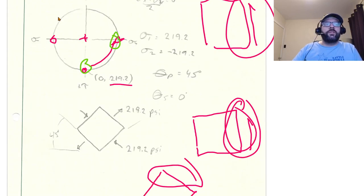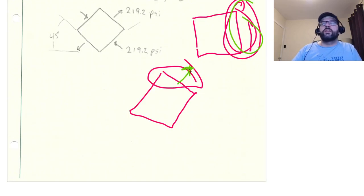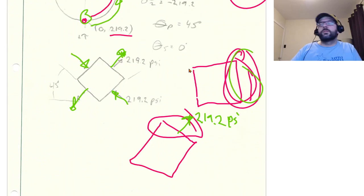So that face turned into the positive stress, which means that we got the directionality of 219.2 psi going that way. So 219.2 psi tensile here and tensile here, and then the same amount but compressive on the other two faces. And that is about that.